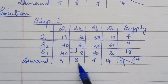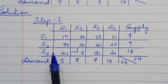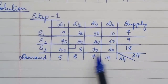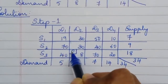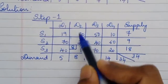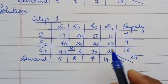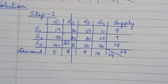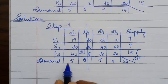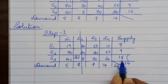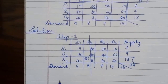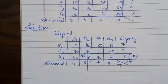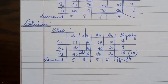When you choose a cell, compare the corresponding supply and demand — whichever is less should be allocated first. Destination D2 demands 8 products, but source S3 can supply 18. So we allocate 8 to satisfy D2's demand. Out of 18 products, 8 are given to D2, leaving S3 with 10 remaining products.